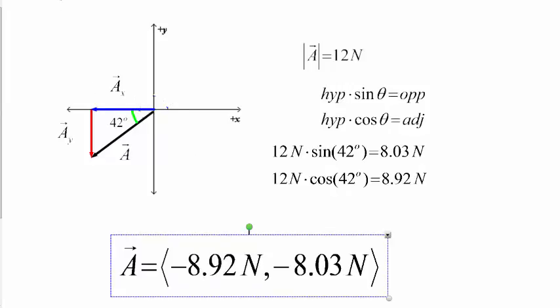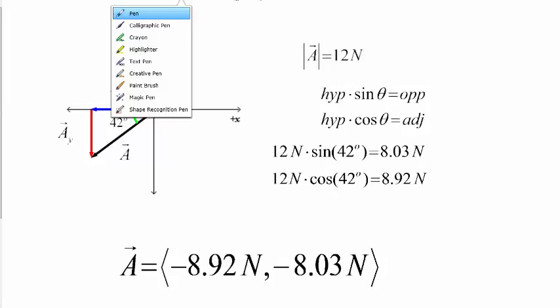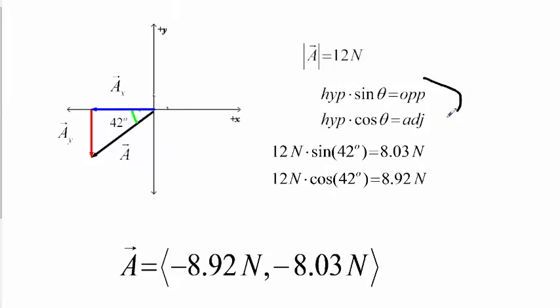So, what's the steps to get it into component form? Well, once you have these vectors sketched out, you want to think back to this little rearranging of the familiar trig functions. And know that a hypotenuse times a sine can give you an opposite length. A hypotenuse times a cosine can give you an adjacent length.